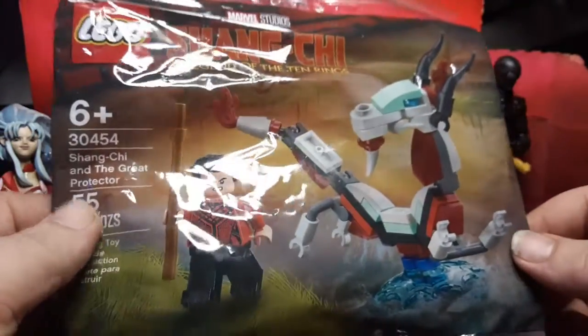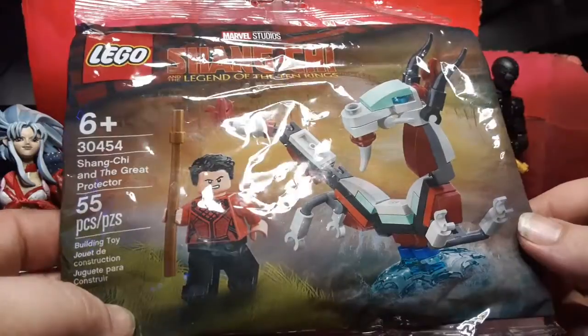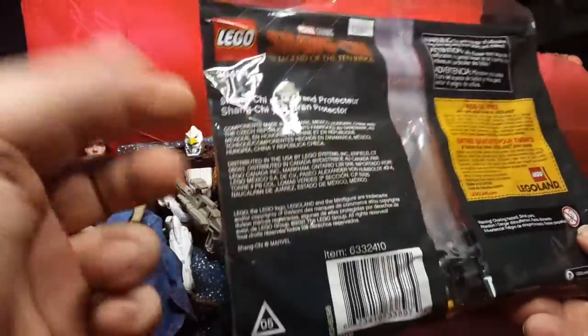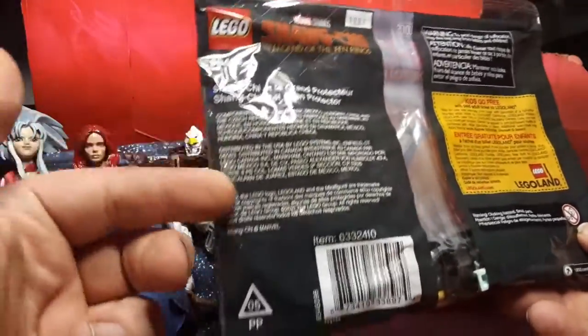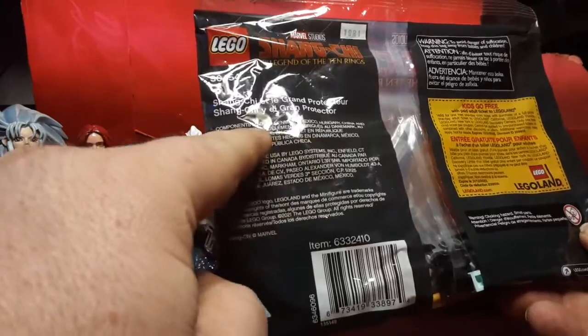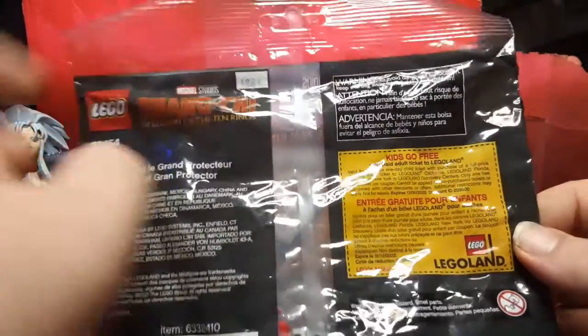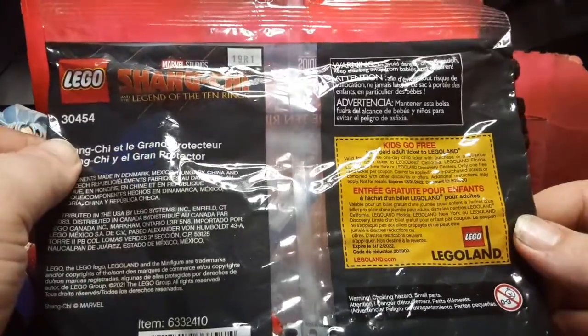On the front we have the big old cool looking dragon guy. We got Shang-Chi minifigure. It's 55 pieces. On the back we've just got regular components where they're made. We've got some Legoland ticket thing advertising where kids can go to free.